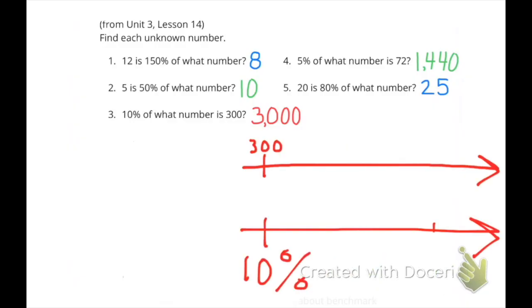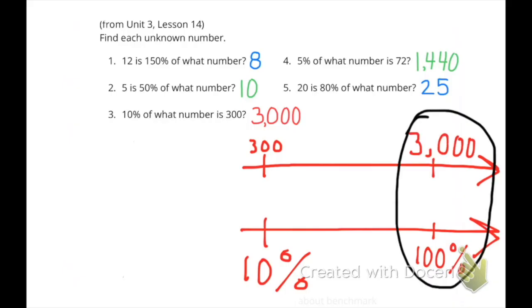Number three. Ten percent of what number is three hundred? Well, ten percent is worth three hundred. Ten percent times ten is one hundred percent. Three hundred times ten is three thousand. Ten percent of three thousand is three hundred.